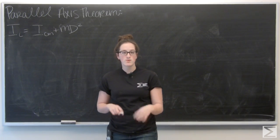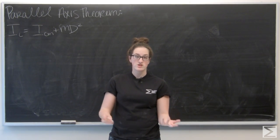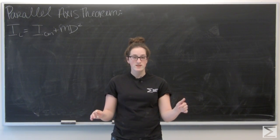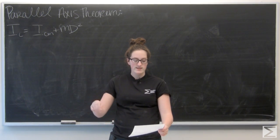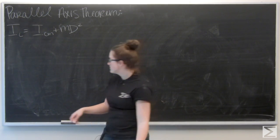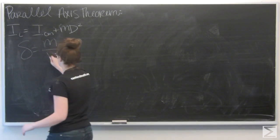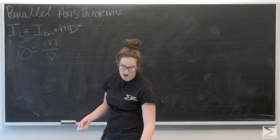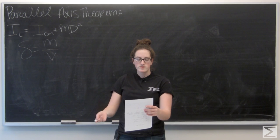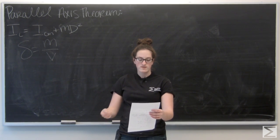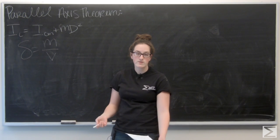For this problem we're going to be working with the parallel axis theorem and the moment of inertia of a ball. The full problem is written in the description below this video. We're asked to consider a ball of radius R with constant density, where M is the total mass and V is the volume of the ball. We're supposed to use the parallel axis theorem to find the moment of inertia of the ball about an axis which is a distance d from the center of the ball.